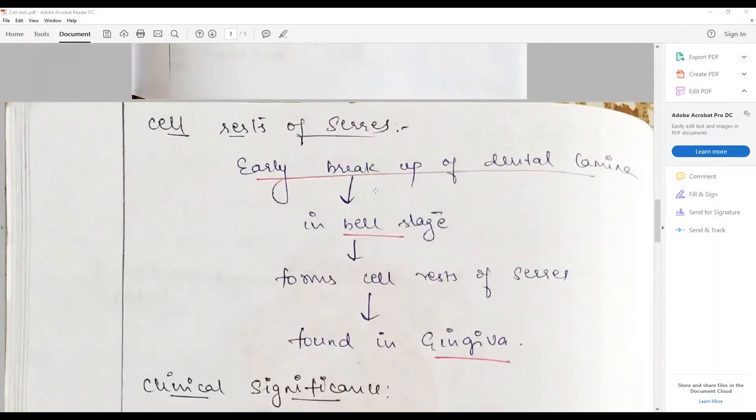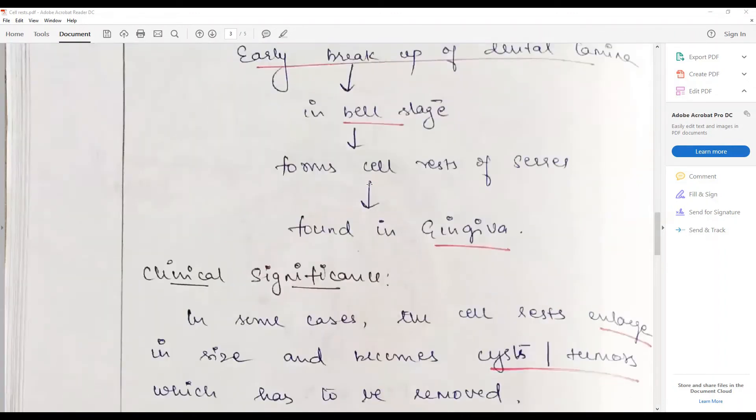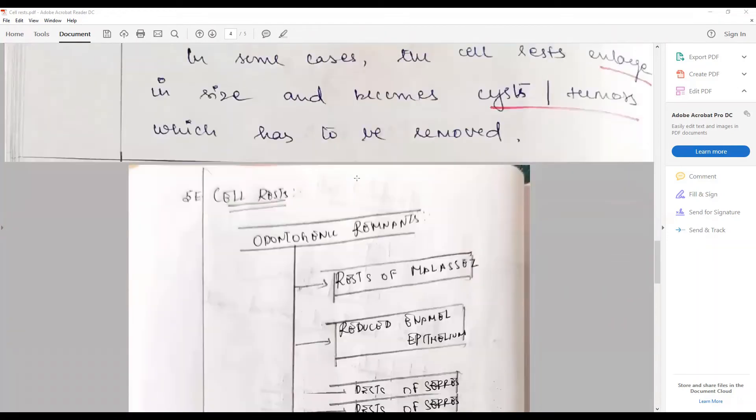They could serve as a function of dental stem cells. Clinical significance: some of these cell rests enlarge in size under favorable conditions and can give rise to cysts and tumors which have to be removed.